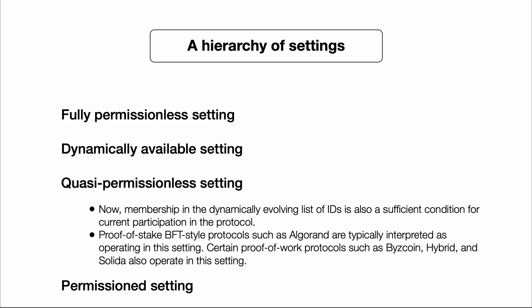A further relaxation of the dynamically available setting is what we call the quasi-permissionless setting. Again the protocol is aware of a dynamically evolving list of IDs, but now — unlike in the dynamically available setting — we're able to assume that all honest members of that list will be active and carrying out the protocol. This allows us to carry out protocols which require quorums. Standard proof-of-stake BFT-style protocols such as Algorand operate in this setting, as do certain proof-of-work protocols such as ByzCoin, Hybrid, and Solidus.